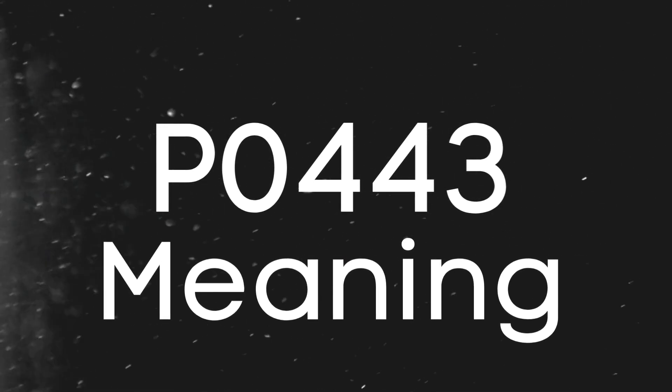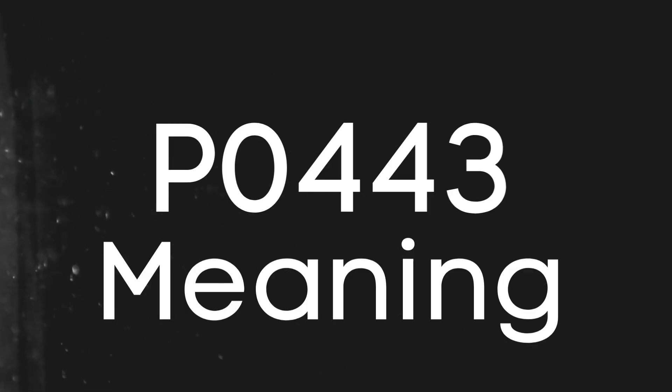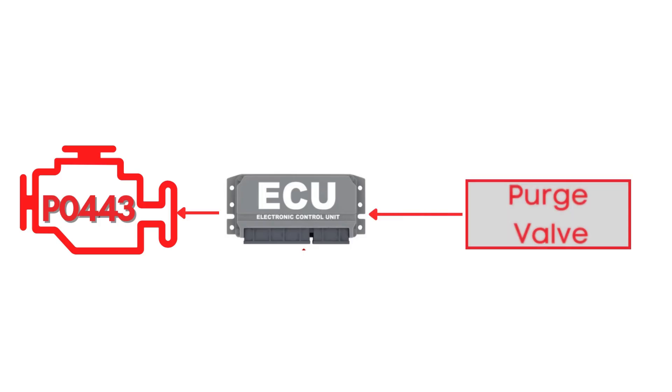First things first, let's break down what the P0443 code actually is. This trouble code pops up when the PCM — also known as the powertrain control module — detects an issue in the circuit that controls the purge valve in the EVAP system.